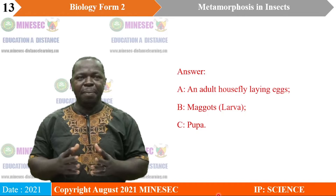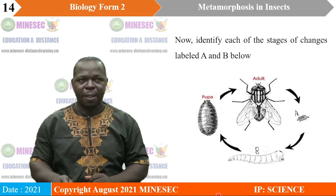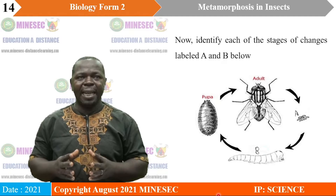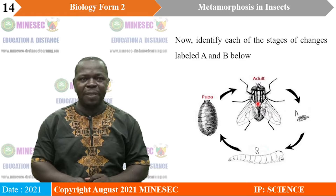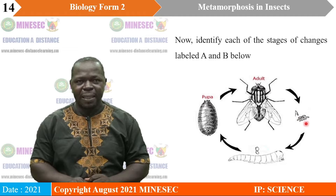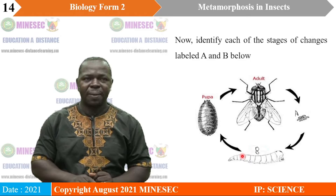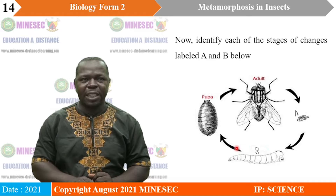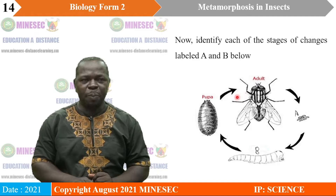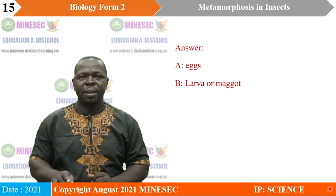Now, identify each of the stages labeled A and B. If you observe this diagram critically, you are going to observe that this is the adult, and the adult produces eggs. These eggs are labeled A. The eggs grow and develop into a larva, and this larva is labeled B. Particularly, this larva is called a maggot. The maggot develops into another stage — the pupa stage. And this pupa stage will later on grow and develop into an adult. So we have stage A, the eggs, and stage B, the larva or the maggot.